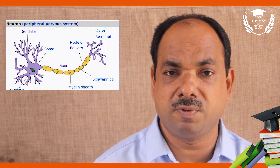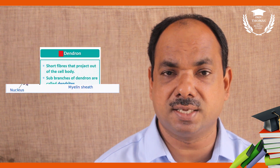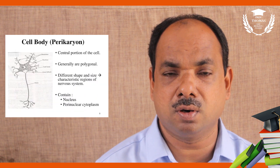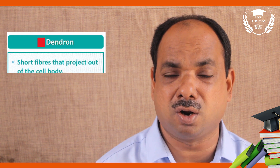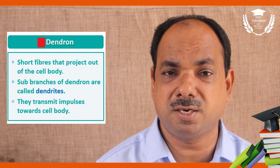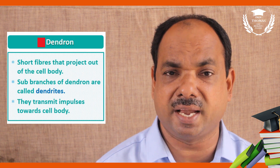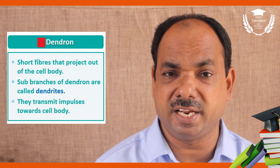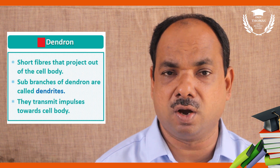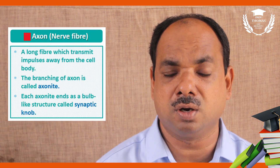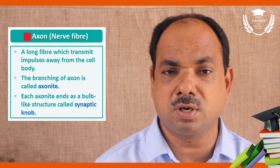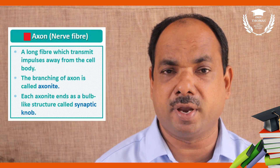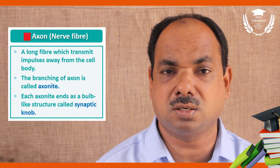Neurons start with a cell body called cytone, pericaryon, or soma. Certain branching structures arise called dendrons, which divide to form dendrites. One structure is very much elongated and is called the axon. The axon starts at a point called the axon hillock.